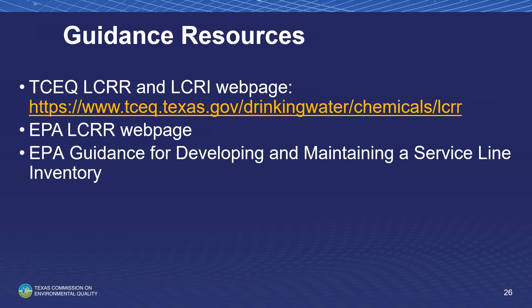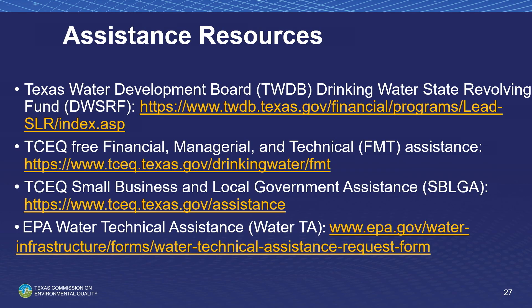Additional resources are available on the TCEQ-LCRR webpage, including inventory form 20943 and EPA guidance on developing and maintaining a service line inventory. Please do not try to print form 20943. If a printed version is needed, use the LSLI investigative standard operating procedure found on the TCEQ-LCRR webpage. This SOP includes a printable version of the detailed inventory that operators can keep in their truck for visual inspection.